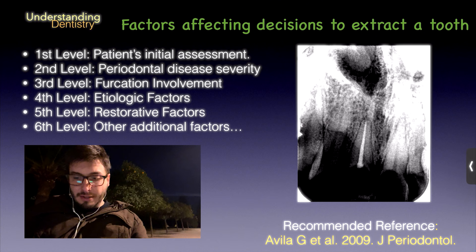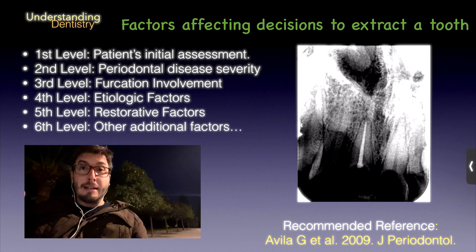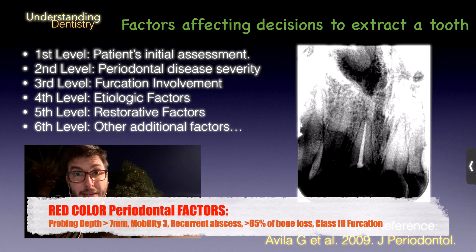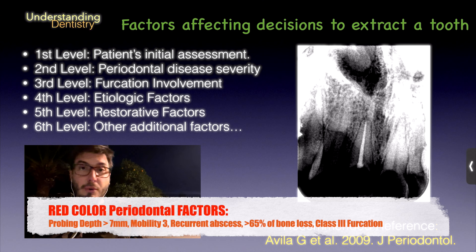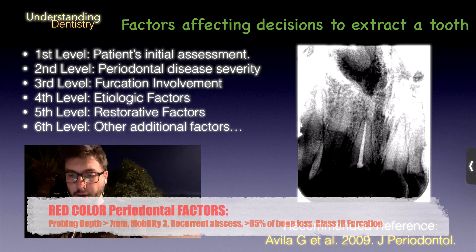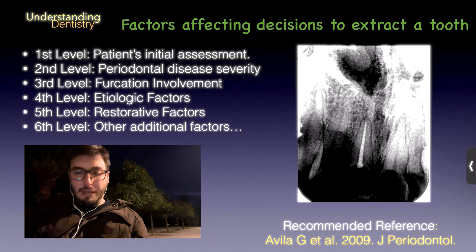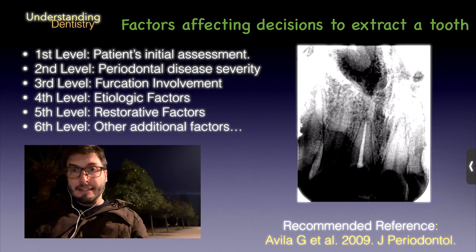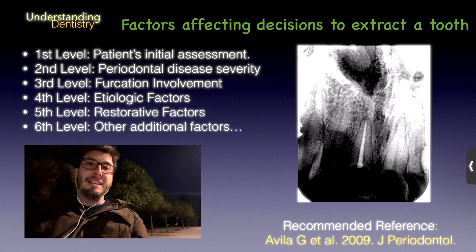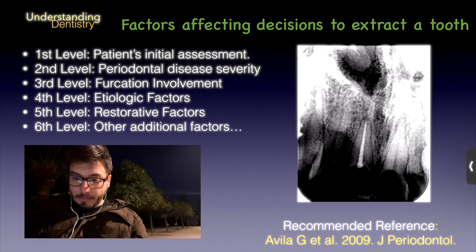The second level covers the severity of periodontal disease. Probing depth greater than seven millimeters is a red color, adding to a worse prognosis. Mobility grade three is red; grade two is yellow; grade zero or one is green — indicating favorable long-term survival. Recurrent periodontal abscess: if absent, green; if present, red. Marginal bone loss greater than two-thirds of the root is also red. Any bone defect morphology affects the classification as well.